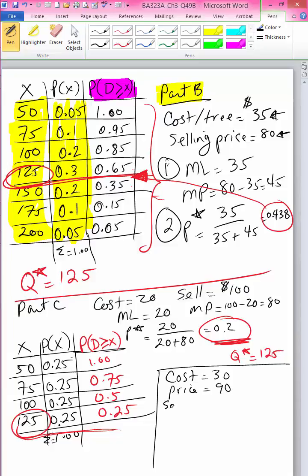But let's say that there is a salvage value. So maybe this is a new thing that we haven't done so far in these calculations. Let's say each tree has a salvage value, meaning that at the end of the season, if they have not sold a tree, that they can maybe sell it for $5 to a local recycling company.